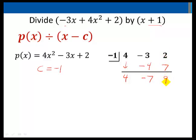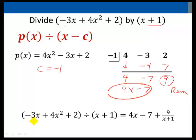So we have essentially taken the polynomial 4x squared minus 3x plus 2 divided by x plus 1 with a result of 4x minus 7. The degree drops by 1 and then with a remainder of 9. We can write our result as negative 3x plus 4x squared plus 2 divided by x plus 1 equals 4x minus 7 plus 9 over x plus 1.